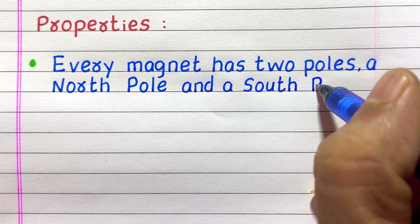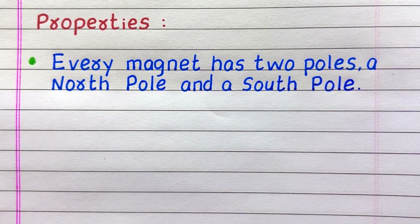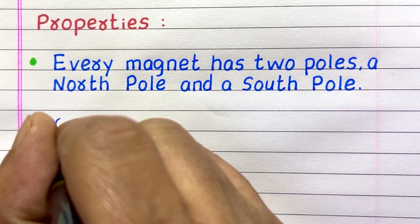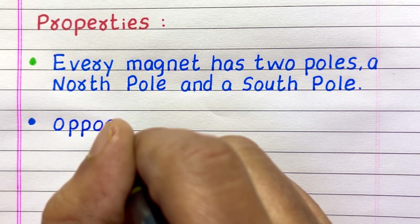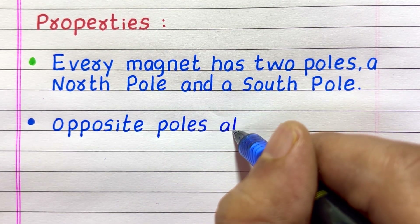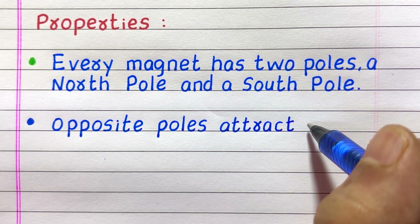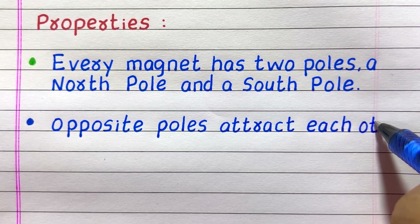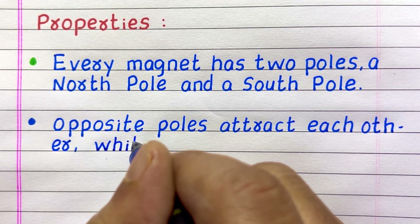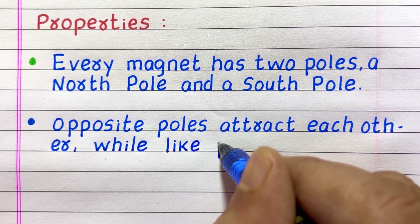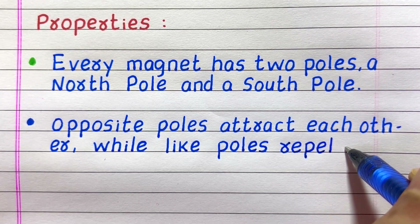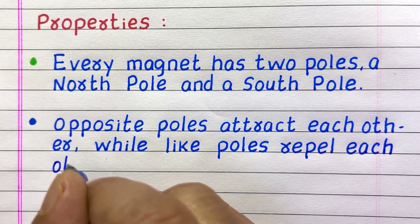Properties of magnets: Every magnet has two poles — a north pole and a south pole. Opposite poles attract each other, while like poles repel each other.